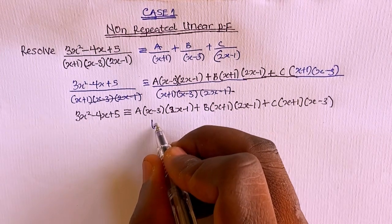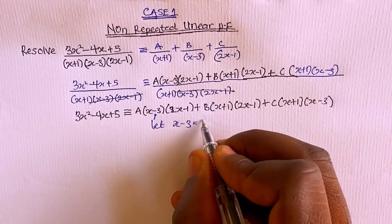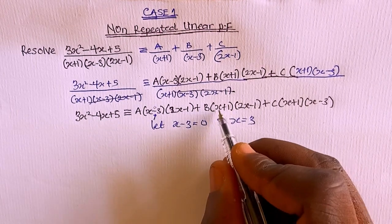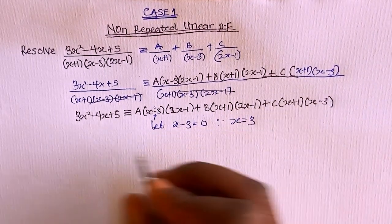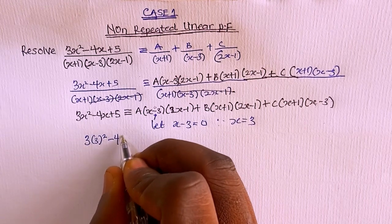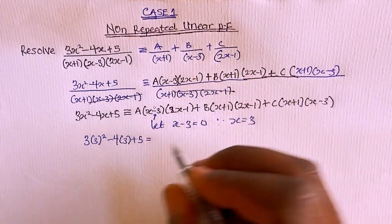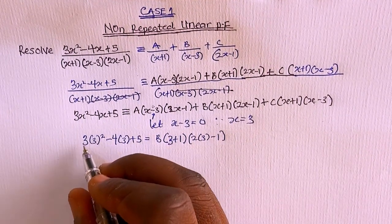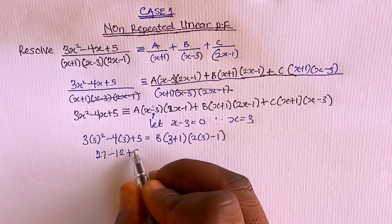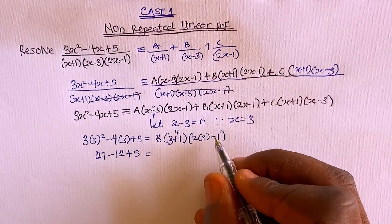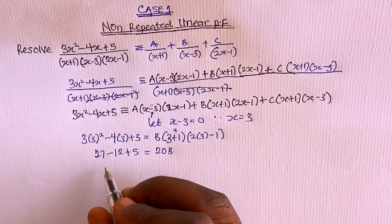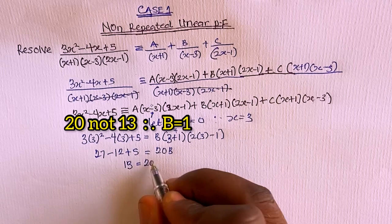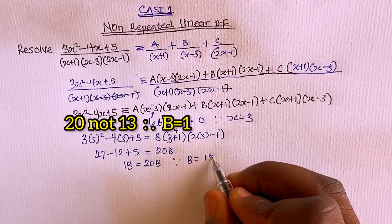To find B, let x−3=0, so x=3. Substituting x=3, the A and C terms become zero. We get 3(3²)−4(3)+5 = B(3+1)(2·3−1), which gives 3(9)−12+5 = B(4)(5). That's 27−12+5 = 20B, so 13 = 20B. Therefore B = 13/20.